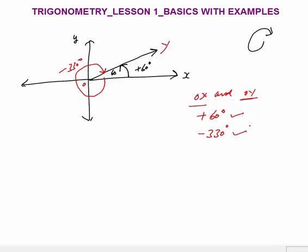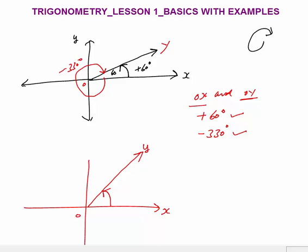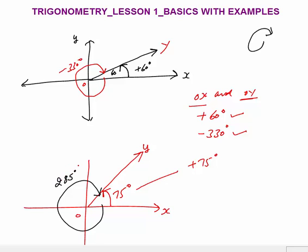Similarly, if ox makes an angle of 75° with oy in the anticlockwise direction, that is a positive angle: plus 75°. If you want to see the clockwise side of the same ray, that angle would be 360 minus 75, which is 285 degrees.